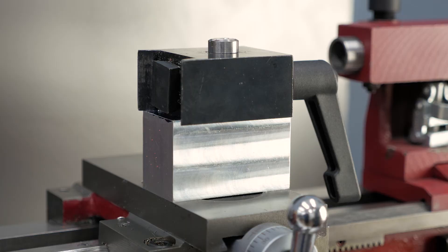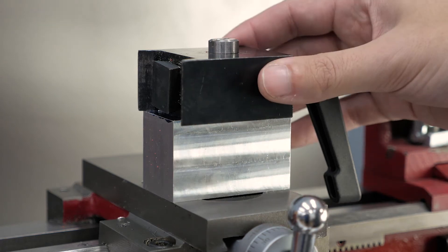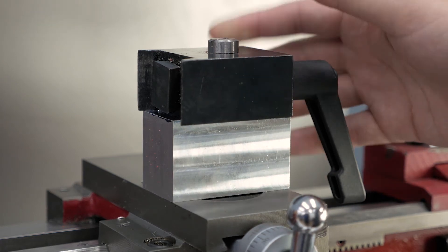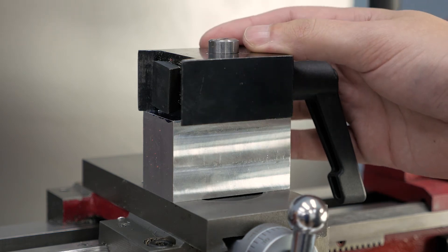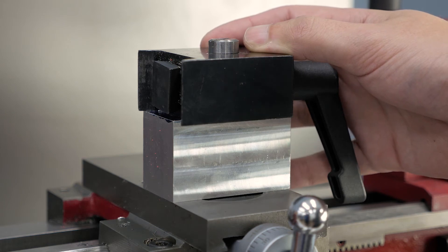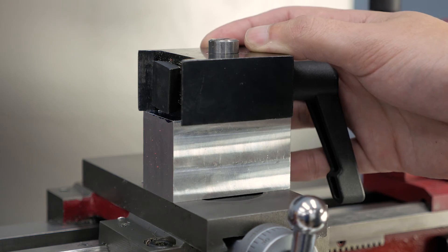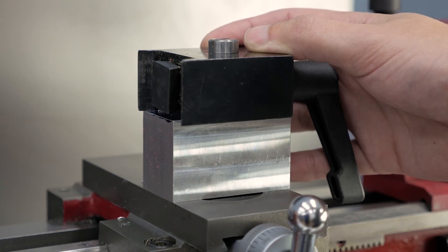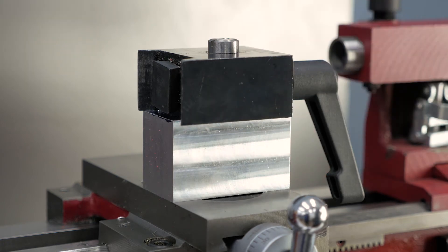The second piece I changed is the tool holder. This is a quick change tool holder. Originally, the lathe comes with a fixed tool holder. And for workflow, I really didn't like it because every time you want to change the tool or make a different type of cut, you are required to remove it. And as I said, I don't like that.